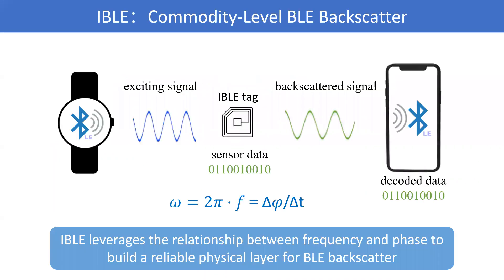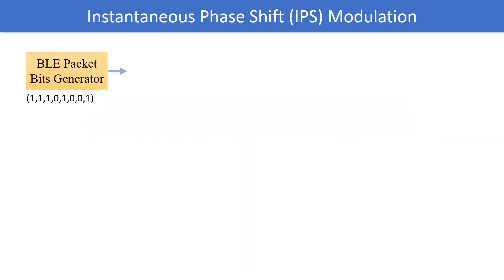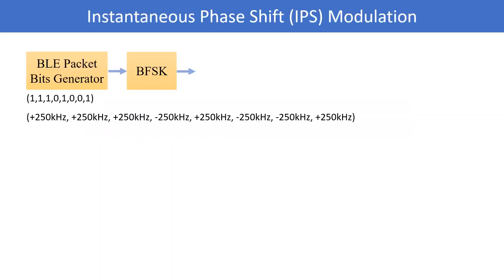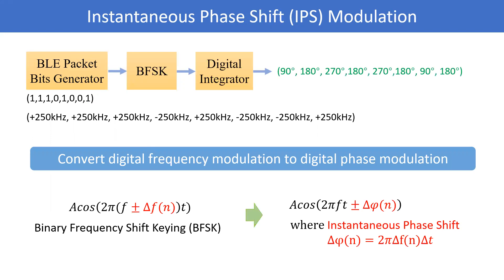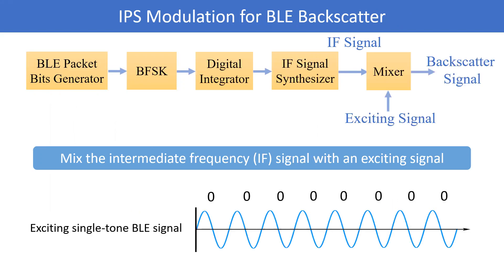BI leverages the relation between frequency and phase to build a reliable physical layer for a BI-BIScatter. Applying calculus, we transform the target modulation from digital frequency modulation to digital phase modulation. We then mix the intermediate frequency signal with an exciting signal to generate a BI-BIScatter signal.